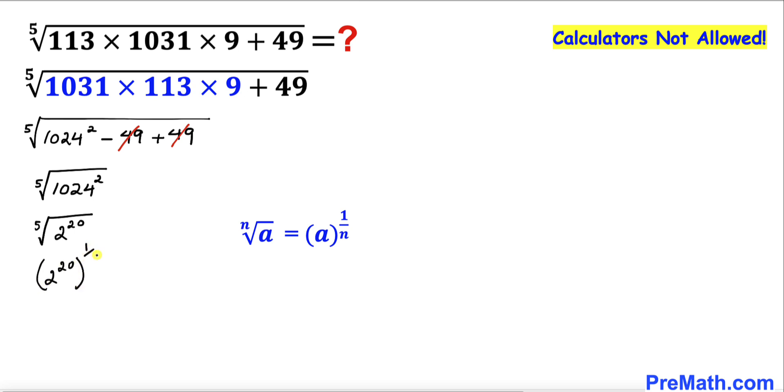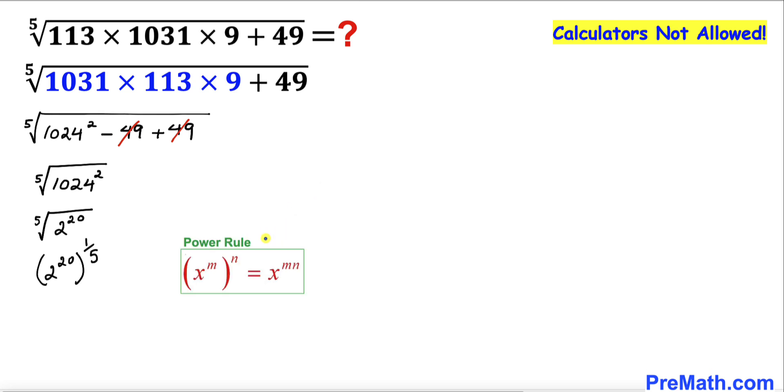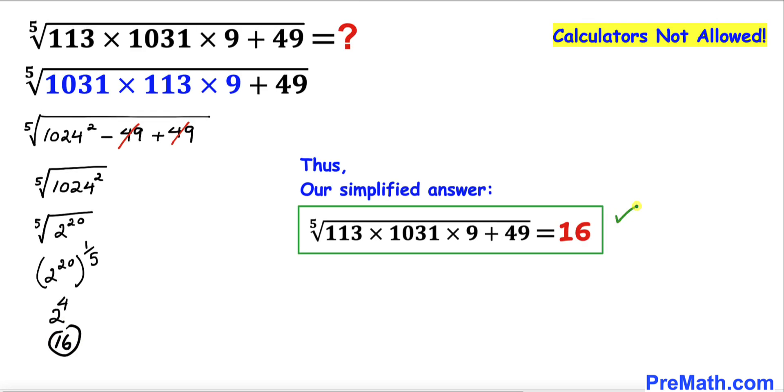Let's apply this power rule once again on these two nested exponents. Therefore we are going to get 2 to the power of 20 times one-fifth, which gives us 2 to the power 4. We know that 2 to the power 4 is 16, so our simplified answer is 16.